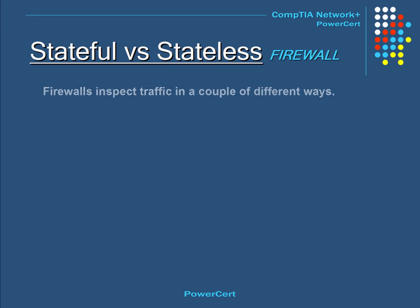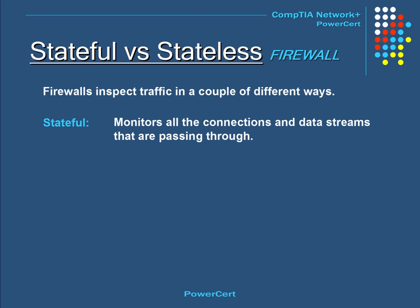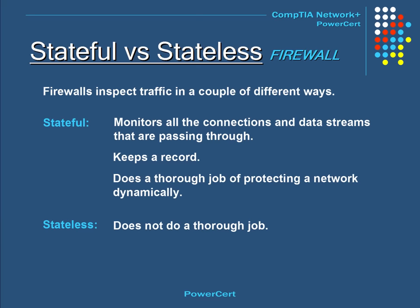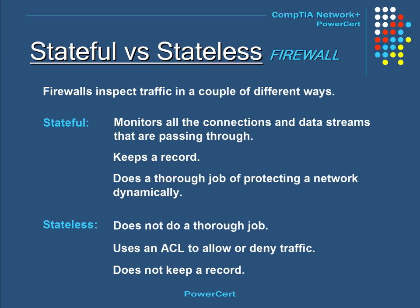Firewalls also inspect traffic in different ways. A stateful firewall monitors all connections and data streams passing through and keeps a record of them. It uses connection information from applications and previous sessions, factoring that into allowing or denying data packets. It does a thorough job of protecting a network dynamically. A stateless firewall, on the other hand, uses an ACL to allow or deny traffic but does not thoroughly inspect a data packet — it only looks at the header portion and does not keep a record of previous data packets.